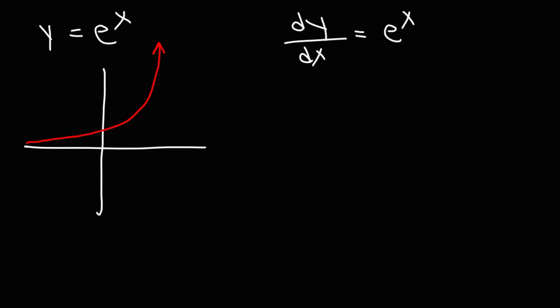Now, there are also some other applications of e, which is also known as Euler's number. For instance, consider the graph y equals e to the x, which looks like this. The derivative of e to the x is also e to the x. So what this means is that if you take the slope at any point of this function, the slope of the tangent line is going to equal the y value at that point. So y is going to equal m at some value of x. So that's one interesting property of e or e to the x.